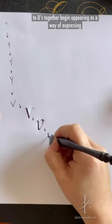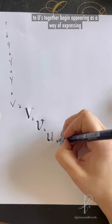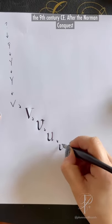Writing two U's together began appearing as a way of expressing the W sound in Germanic languages around the 9th century CE.